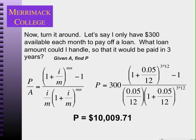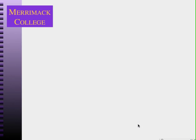In the last video we went through a problem where we could afford three hundred dollars per month and wanted to know how much we could borrow at a five percent per year interest rate compounded monthly. Using the more accurate formula, we came out with how much we can afford being ten thousand dollars.